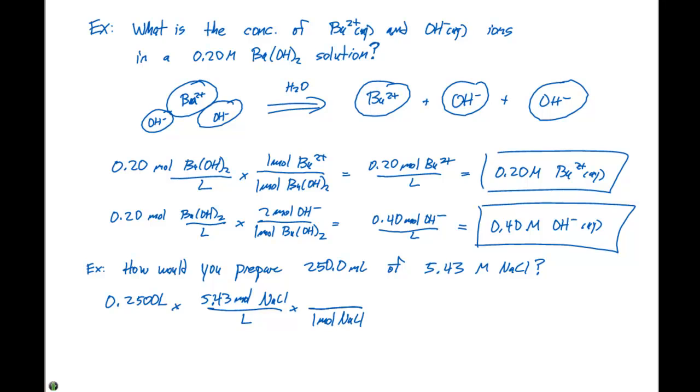we can look at the periodic table and determine that's 58.44 grams of NaCl. This gives us a value of 79.3 grams of NaCl.